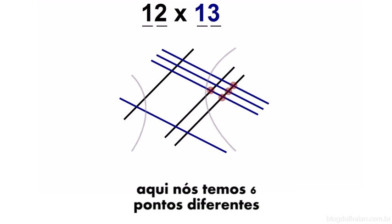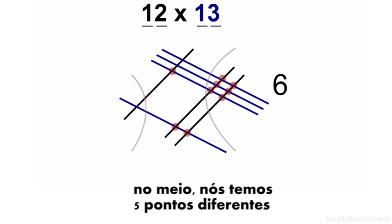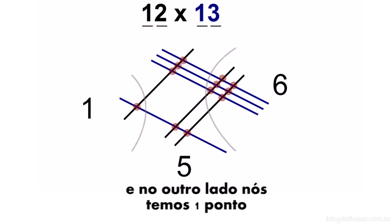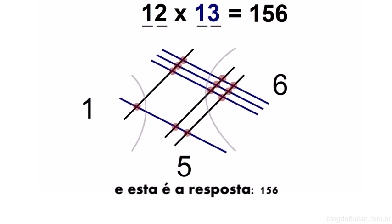Here we have six different dots. In the middle, we have five different dots. And on the other side, we have one dot. And that's the answer, 156.